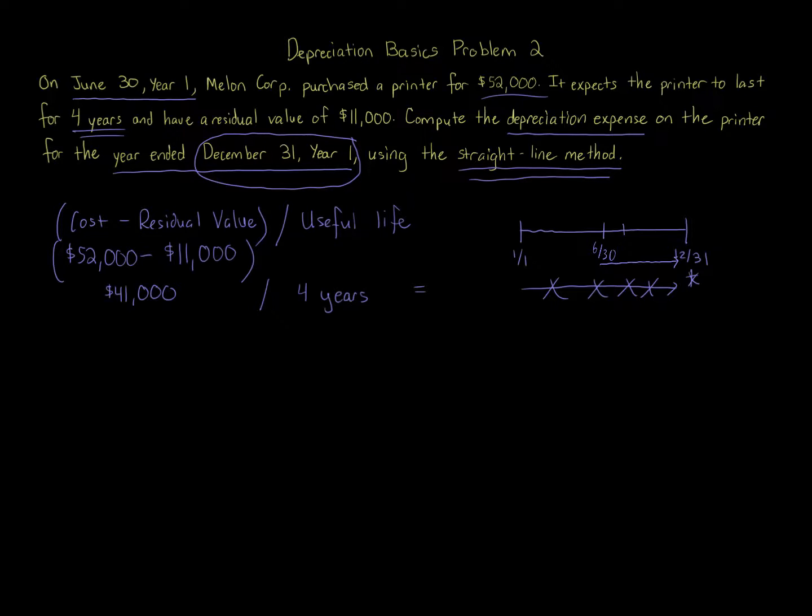Specifically, we place it in service on June 30th, so there's July, August, September, October, November, and December—six months. Because we're placing it in service on June 30th, we don't get any depreciation for the month of June. So July through December, that's six months worth of depreciation. We're going to take $41,000 over four years, and then multiply that by six months over 12 months.